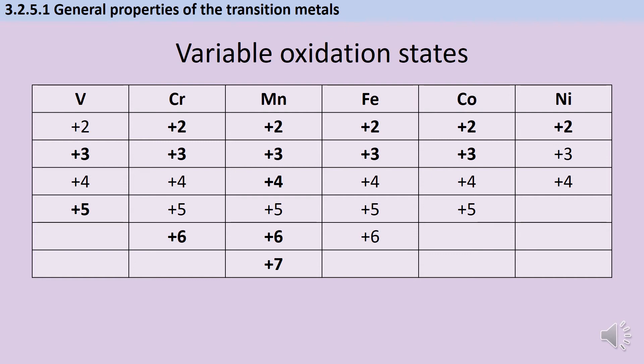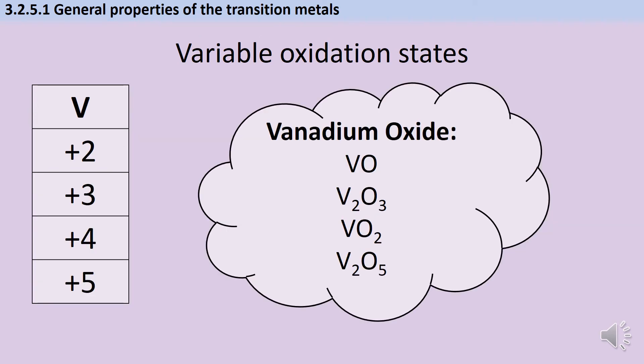You don't really need to memorize loads of these, but there are particular examples that you need to know about. It's also important that you can use the oxidation state of that metal, which will be indicated using Roman numerals, in order to derive the formula of an ionic compound. For instance, if we think about oxides of vanadium, if we've got vanadium with a +2 oxidation state, that will form vanadium monoxide, which is VO.